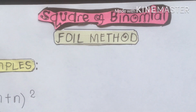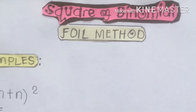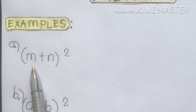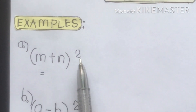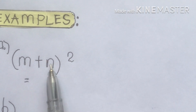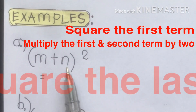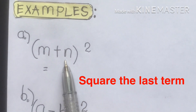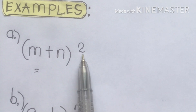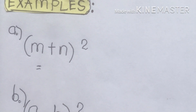Let's refresh our examples in solving. Remember class, we have tips for solving the square of a binomial. The first tip: multiply the first term to the exponent. Then get the product of the first and second term and multiply it by two. The last part: multiply the second term to the exponent. That is the final product of the square of a binomial.